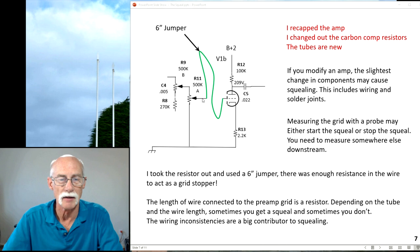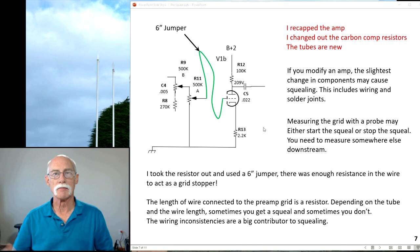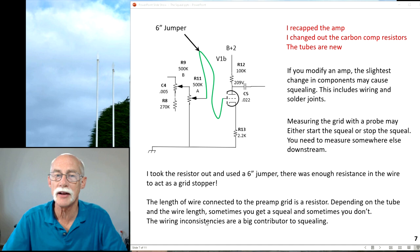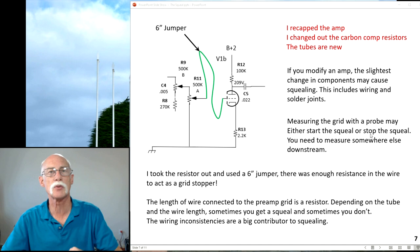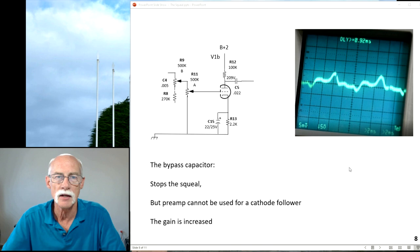I removed that wire and hooked back up the volume signal wire to the grid and squealing started again. And I thought, okay, sometimes you get it, sometimes you don't. But the truth of the matter is, sometimes wiring inconsistencies are the biggest contributor to squealing. This is why this amp squeals and that one doesn't. I built them the same way. One squeals, the other doesn't.